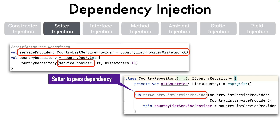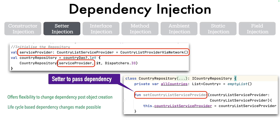This mechanism — using a setter method to provide the dependency after the object has been created — offers more flexibility to change the dependency post object creation. Especially in cases where lifecycle-based dependencies need to be managed, this becomes very handy to use.